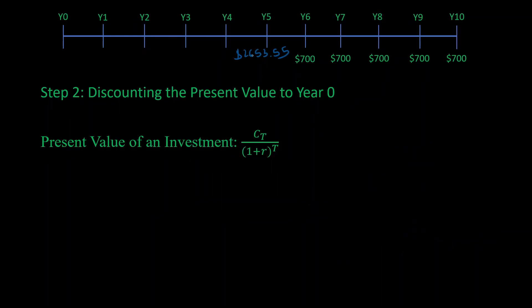Note that here, C_T is the money you get in period T. Here T = 5, and C = $2,653.55 as we calculated. Let's input all the values now.